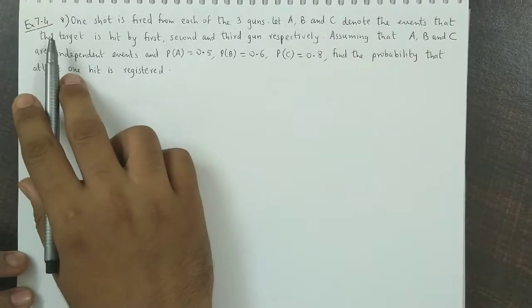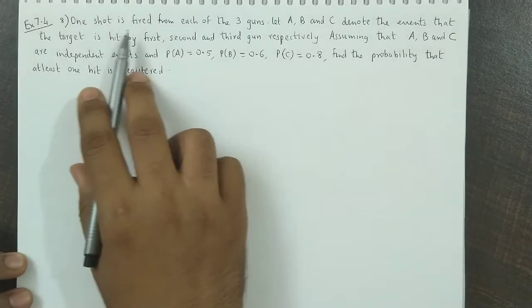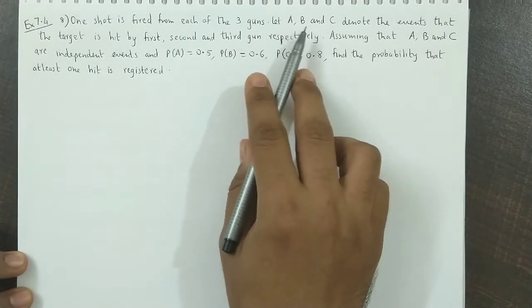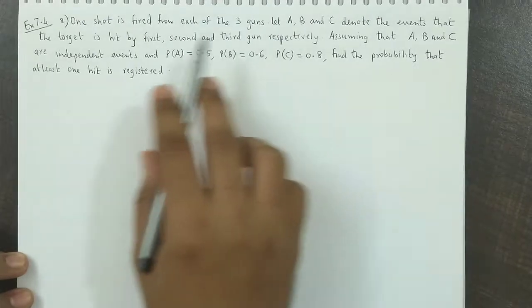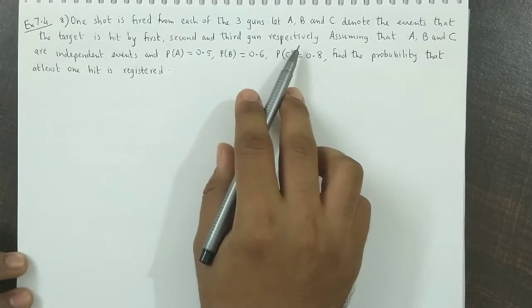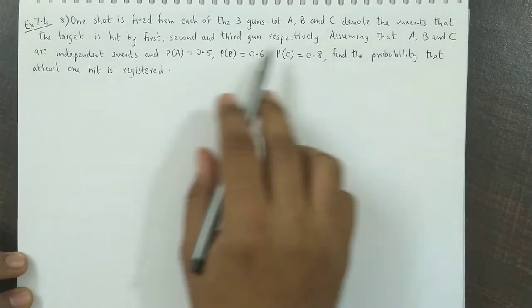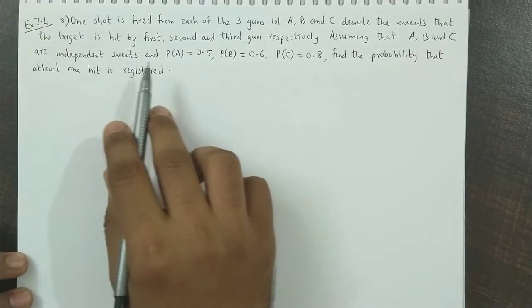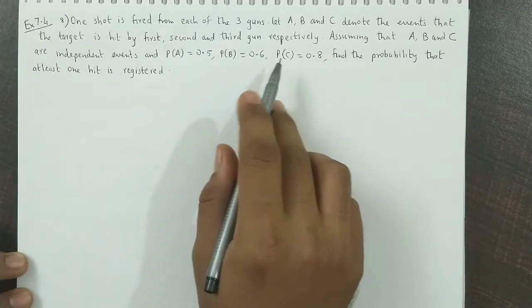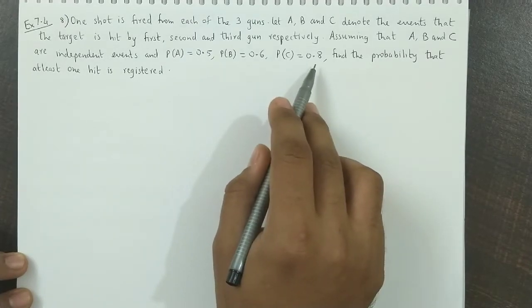Exercise 7.4, Question Number 8: One shot is fired from each of three guns. Let A, B, and C denote the events that the target is hit by first, second, and third gun respectively. Assuming that A, B, and C are independent events with probability of A equals 0.5, B equals 0.6, and probability of C equals 0.8. Find the probability that at least one hit is registered.